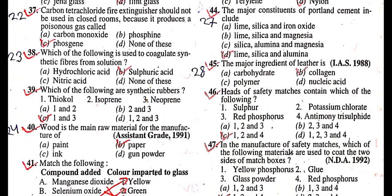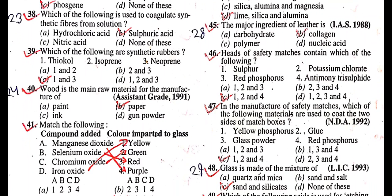Question: The major constituents of Portland cement include? Answer is lime, silica, and alumina. Question: The major ingredient of leather is? Answer is collagen.